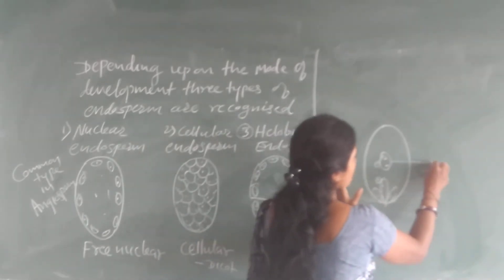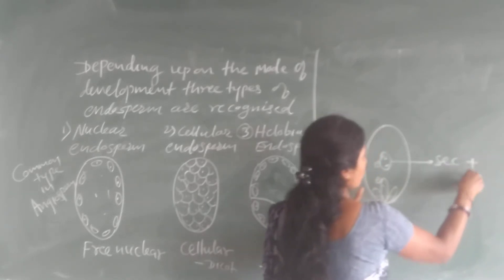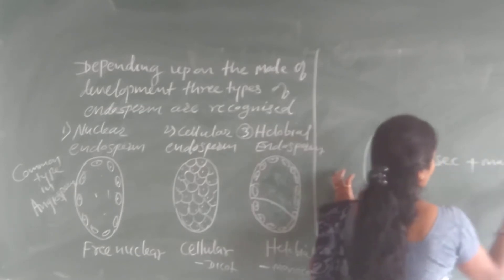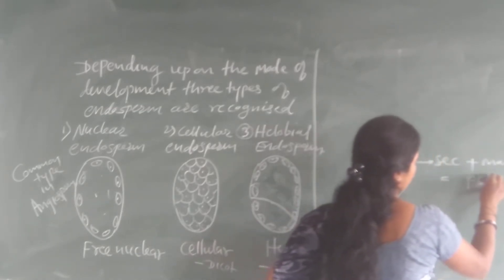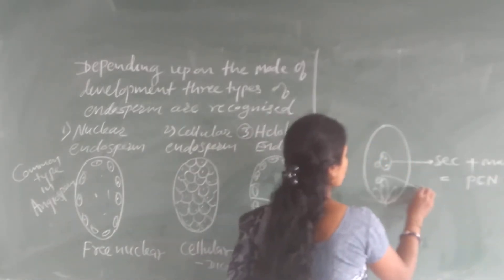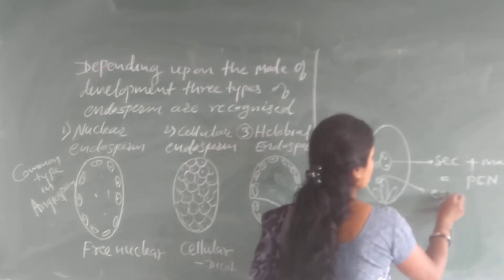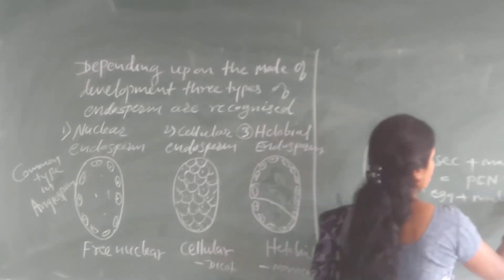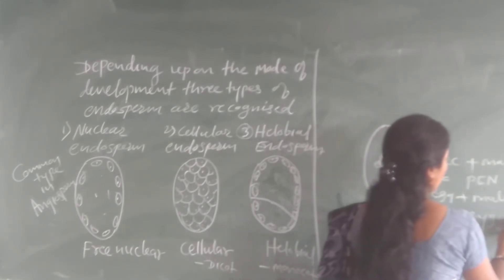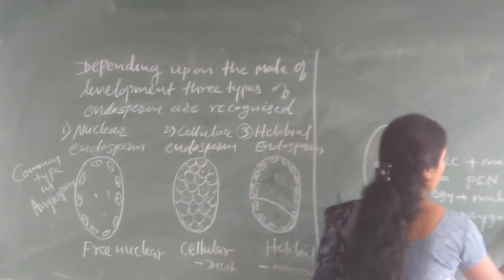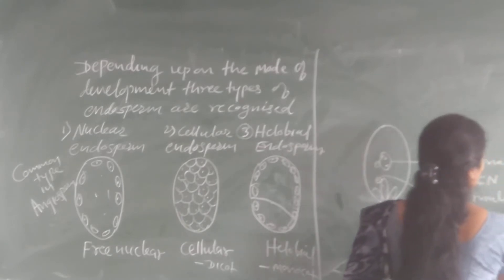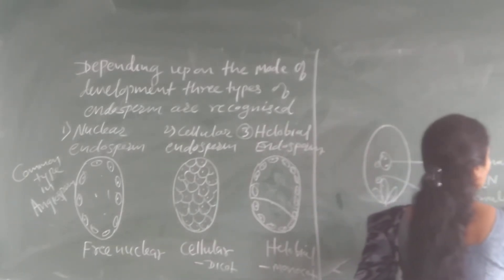This gives the product: the secondary nucleus plus male gamete gives us the primary endosperm nucleus. And the egg plus male gamete forms the zygote. This zygote undergoes repeated division to form the embryo, and the primary endosperm nucleus undergoes repeated division to form the endosperm.